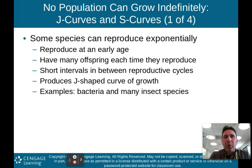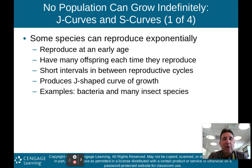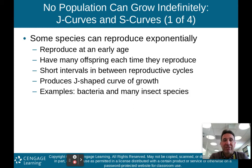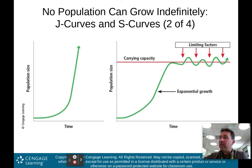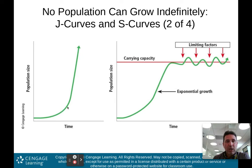No population can grow indefinitely. Some species can reproduce exponentially — they reproduce at an early age, have many offspring each time, and have short intervals between reproductive cycles. Examples are bacteria and most insect species. They produce a J-shaped curve of growth, which looks like a J. It means population size grows exponentially — starts off kind of slow, but then as the population increases, you get an explosion of population.